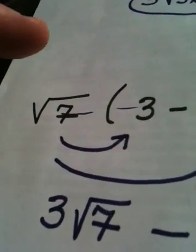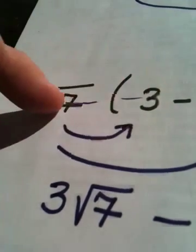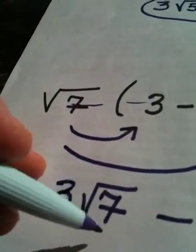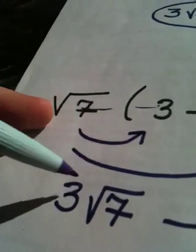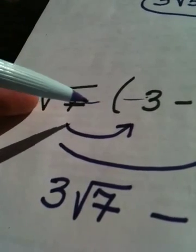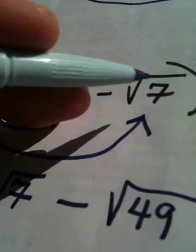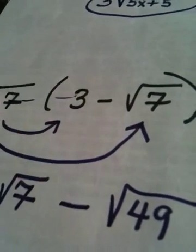Now, notice in the front, sometimes students say to me, how come that 3 didn't go under the radical? Well, this 3 was not under the radical to begin with, so it just stays in front. 3 root 7. But root 7 times root 7 becomes the square root of 49.